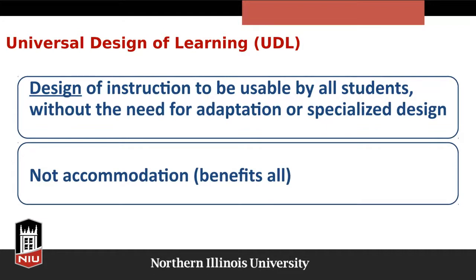Universal design for learning — to provide some background: universal design hits at accessibility, but it's not focused on disability. It's focused on making your course materials accessible to all. It's really about the overall design of instruction as well as specific instructional materials, facilities, and strategies like lectures, classroom discussions, group work, web-based instruction, labs, and field work demonstrations. Universally designed curriculum provides students with a wide range of abilities, disabilities, ethnic backgrounds, language skills, and learning styles with multiple means of representation, expression, and engagement. For a more in-depth discussion, I'll post a link in the chat.